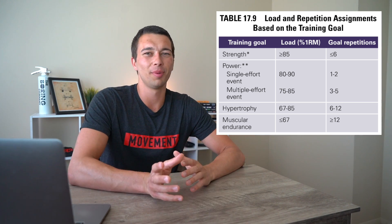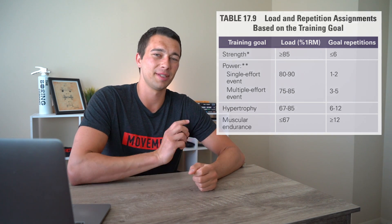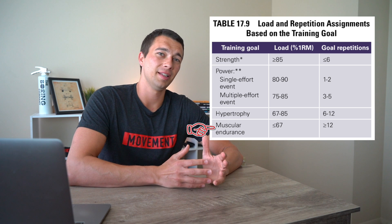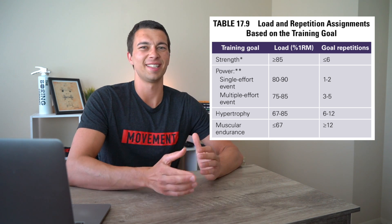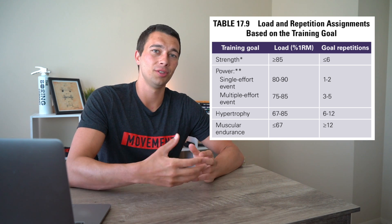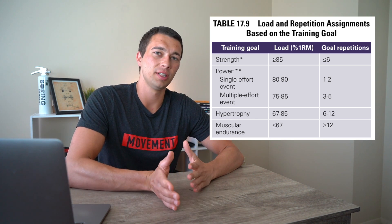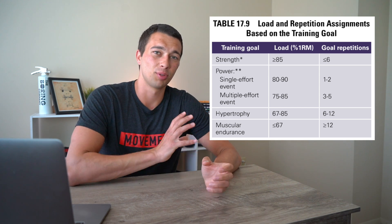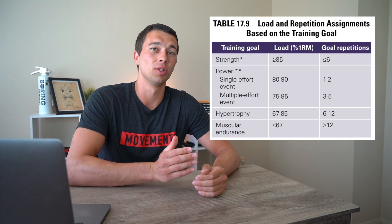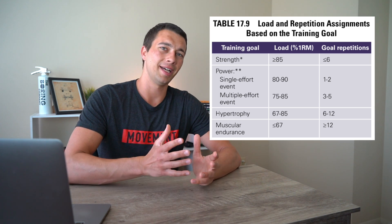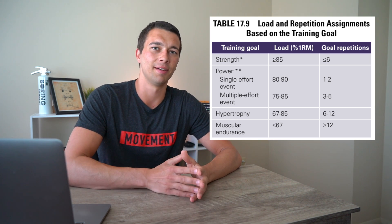For muscular endurance, we might do something like three sets of 15 at 60% one rep max — loading fairly low with fairly high volume, but only two to three sets versus having a bunch of sets. If we're going to about 15 reps, we're probably going to be around that 60% intensity level, which is below 67% one rep max.